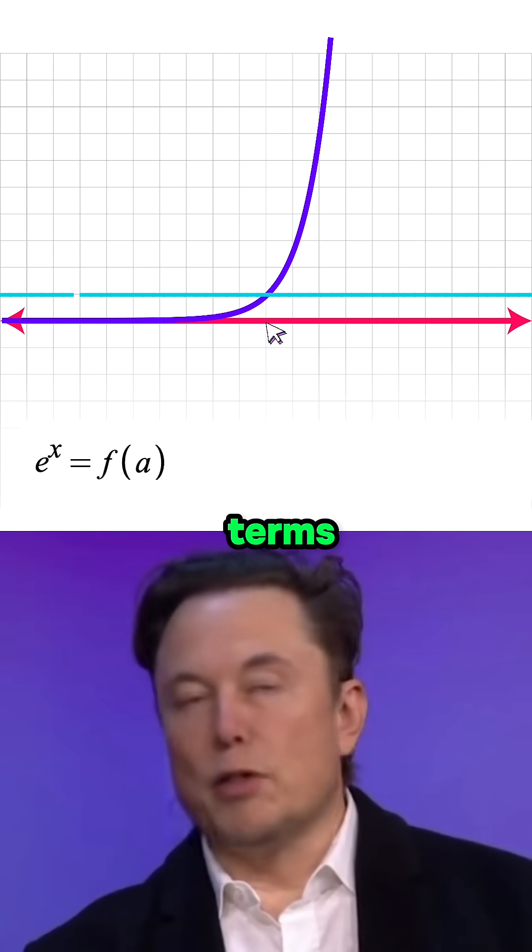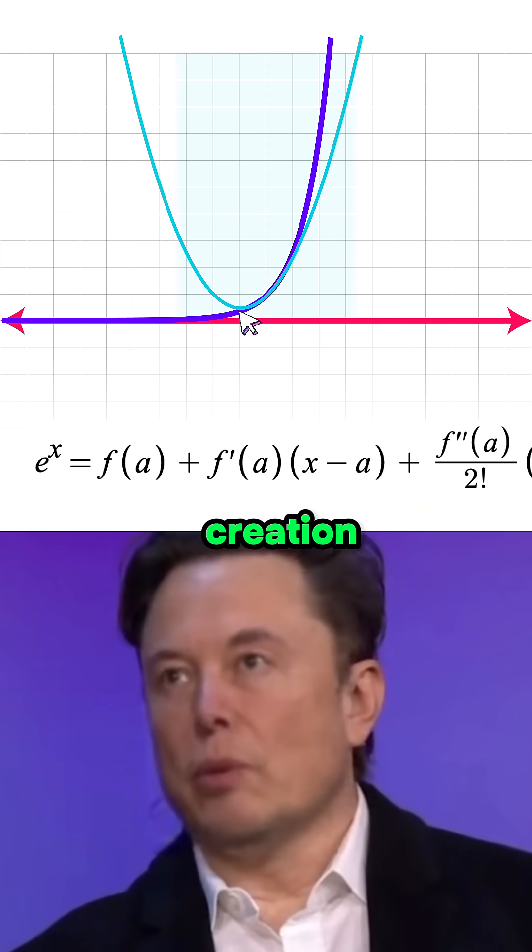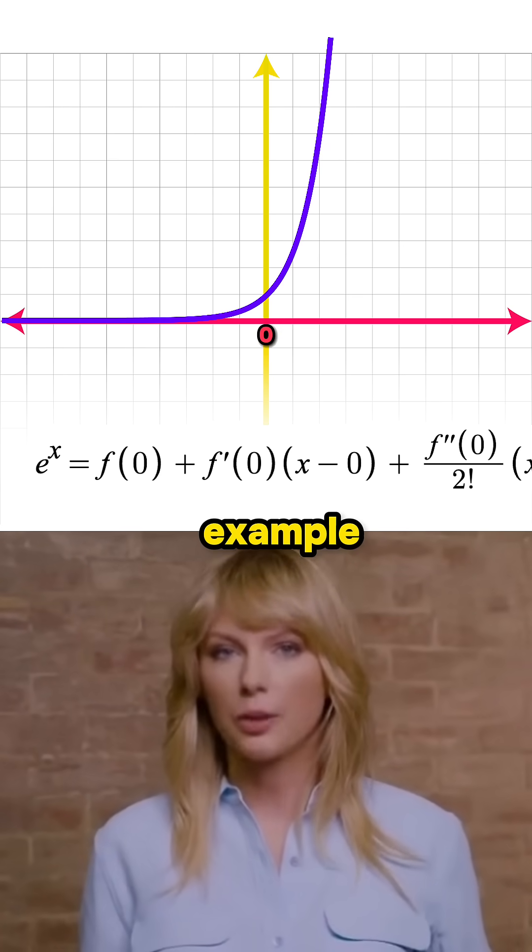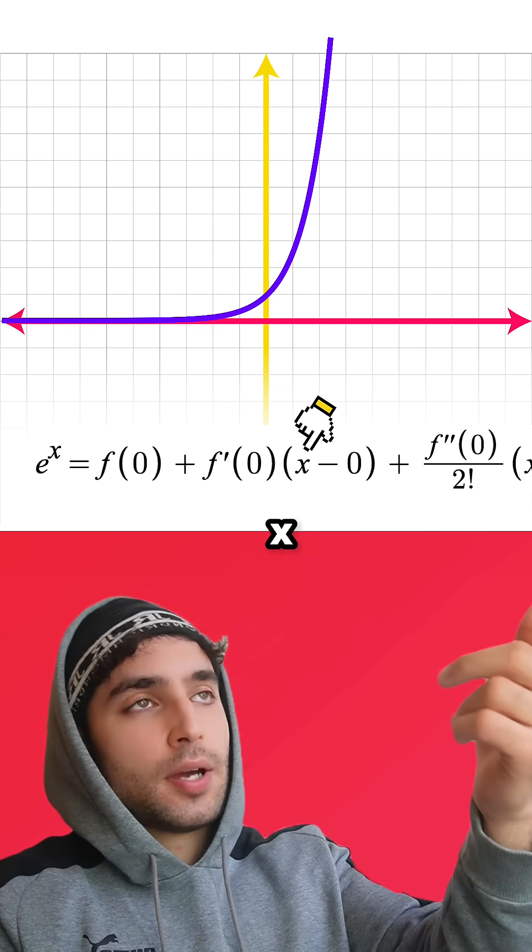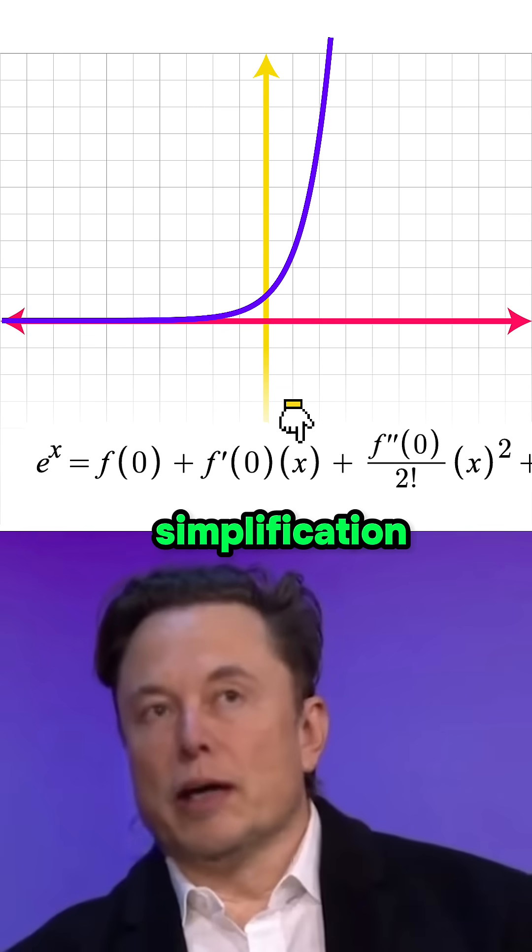So as we start adding these terms, a is the spot where our creation will be most accurate. Let's just set it to zero for this example and watch what happens. Hang on, x minus zero is x. Nice simplification.